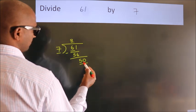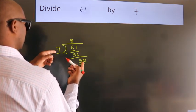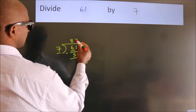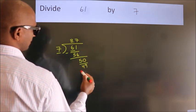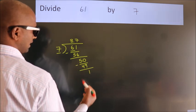So, 50. A number close to 50 in the 7 table is 7 times 7, 49. Now, we subtract. We get 1.